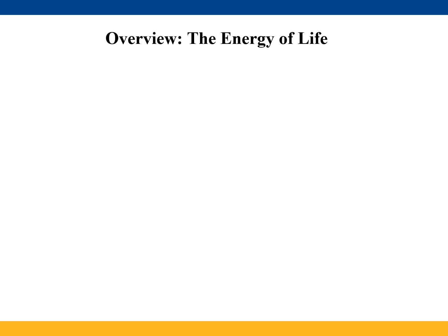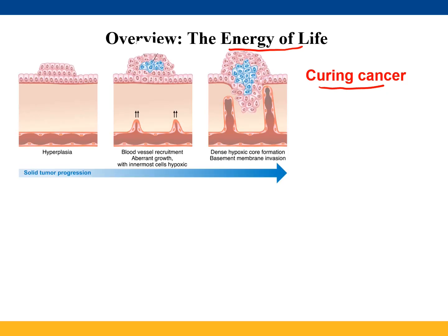Why do we study the relationship between energy and life? There are multiple reasons, but for example this relationship is very important if we want to cure cancer. In this schematic, the first stage shows normal tissue; in the second, a mutation takes place and the tumor starts growing; in the third, blood vessels start getting close to the tumor and the tumor continues growing — because the tumor needs to get energy from those blood vessels.